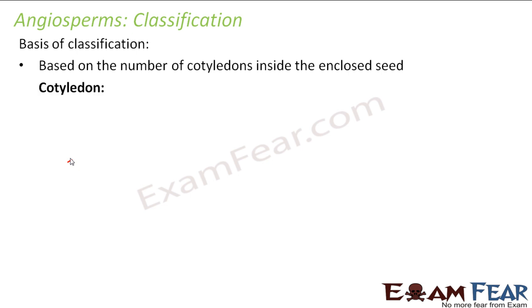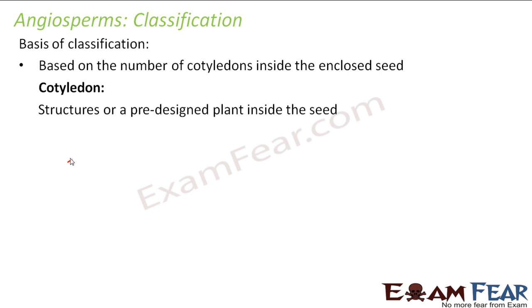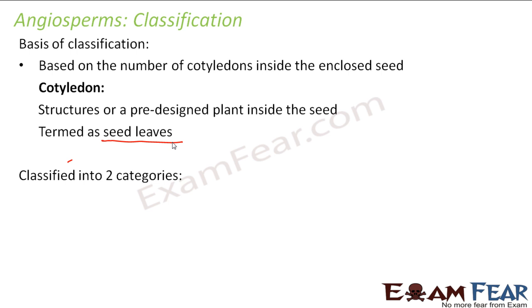Cotyledons are structures representing a pre-designed plant inside the seed. They appear in the form of leaf-like structures and are basically a very young plant — the structure which will gradually grow into a big plant. They are also termed seed leaves because most of the time they give the appearance of a leaf.